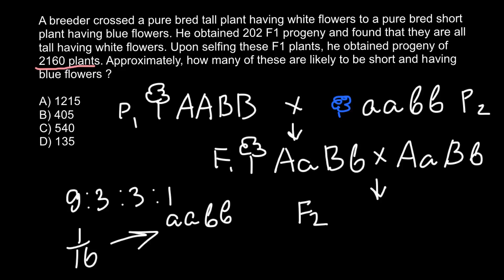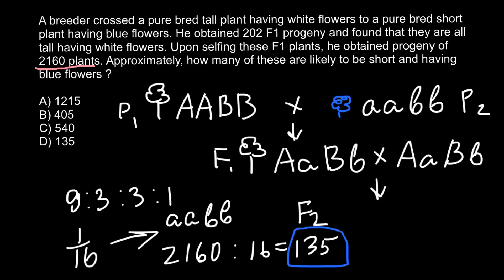The last step is to multiply 2160 by 1/16, or equivalently divide by 16. Anything multiplied by 1 stays the same, so we simply divide 2160 by 16. The answer is 135. This is our answer today — answer D.